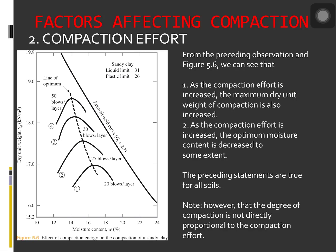If the compaction effort per unit volume is changed, the graph for the moisture and unit weight curve will also change, which can be demonstrated with the figure on the screen, which shows four compaction curves for a sandy clay. The standard proctor mold and hammer were used to obtain the compaction curve. The number of layers of soil used for compaction was kept at 3 for all cases. However, the number of blows per each layer varied from 20 to 50.